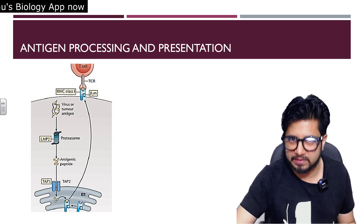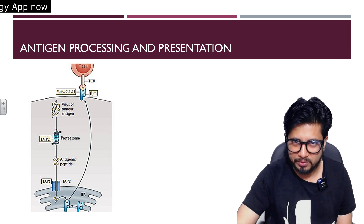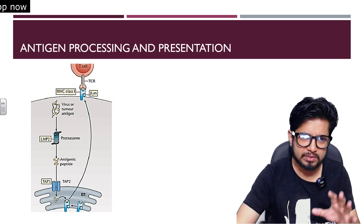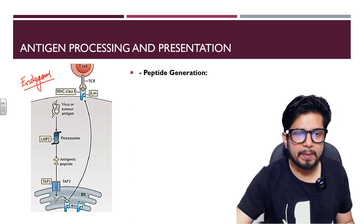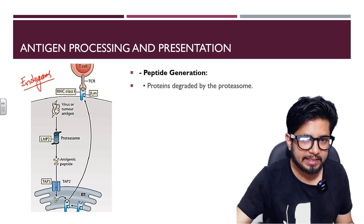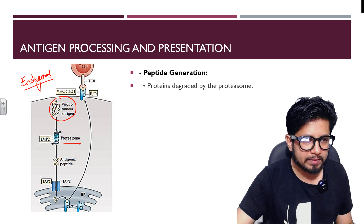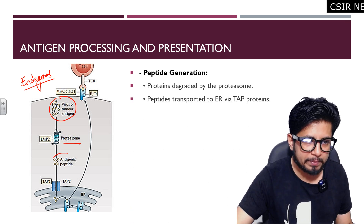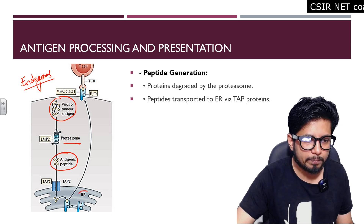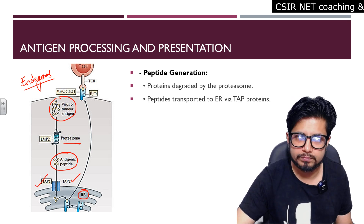The mechanism of antigen processing and presentation by MHC class 1 involves endogenous peptides. First, proteins — such as viral or tumor antigens — are degraded by the proteasome, specifically the LMP2 category, into smaller peptide fragments. These peptides are then transported into the endoplasmic reticulum via transporter proteins known as TAP1 or TAP2, which form channels in the ER membrane.